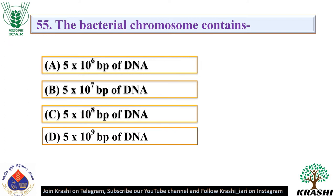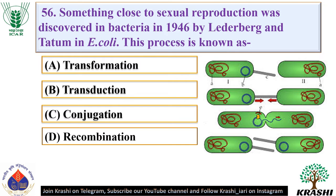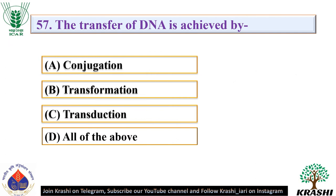Question number 55: The bacterial chromosome contains — it contains 5 × 10⁶ base pairs of DNA. Question number 56: Something close to sexual reproduction was discovered in bacteria in 1946 by Lederberg and Tatum in E. coli. This process is known as conjugation — the process by which one bacterium transfers genetic material to another through direct contact. Question number 57: The transfer of DNA is achieved by conjugation, transformation, and transduction — the correct answer is all of the above.